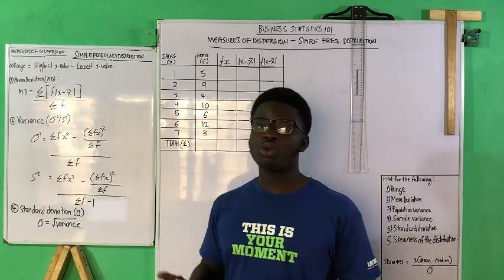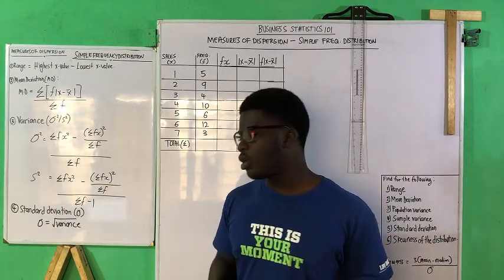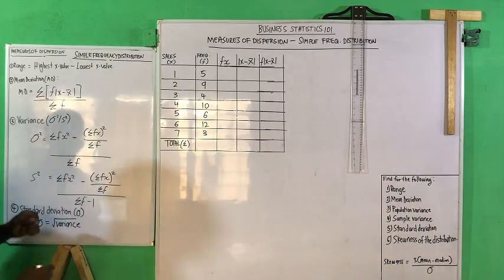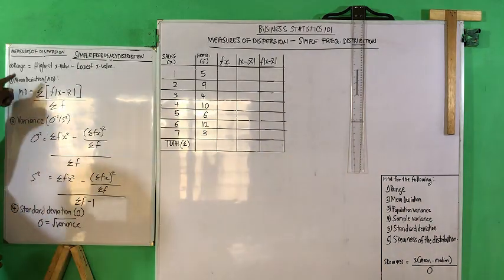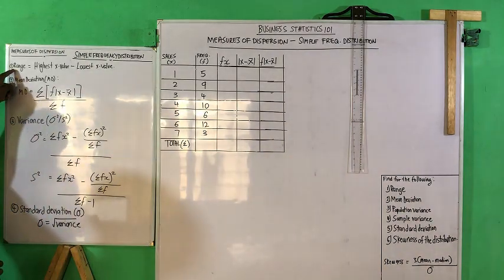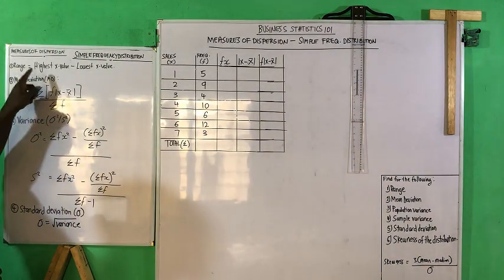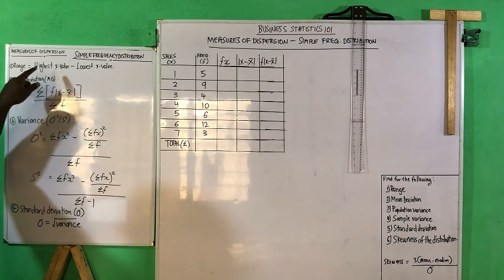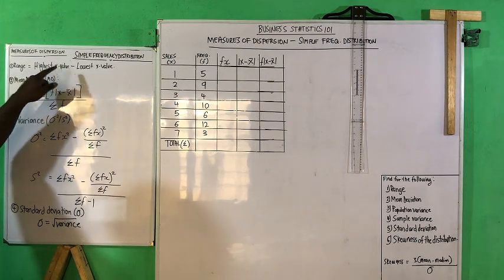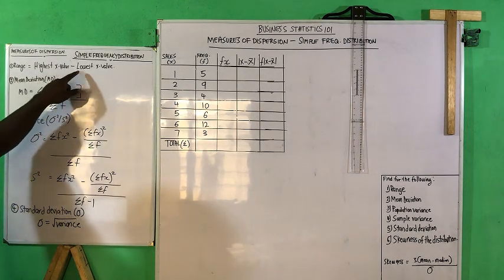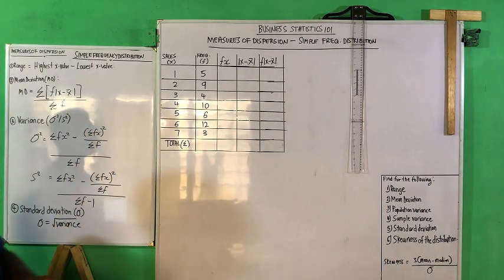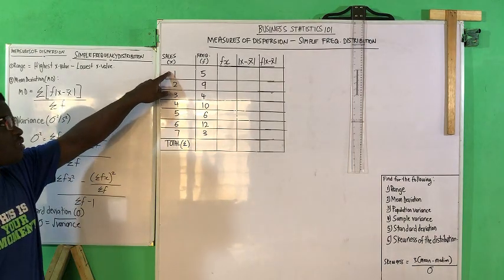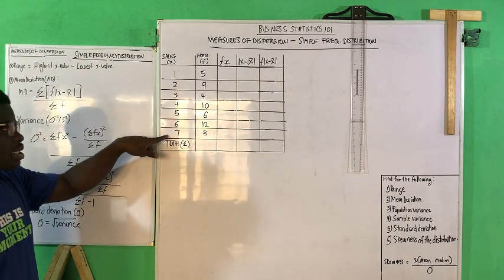The standard deviation is the square root of the variance. We have the range, which is given by the highest x value minus the lowest x value. So this is the lowest x value and this is the highest x value.